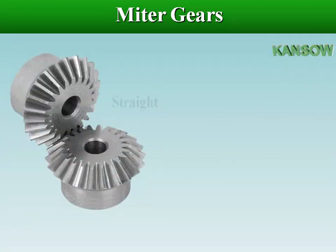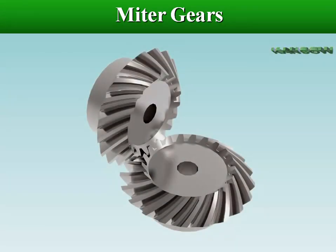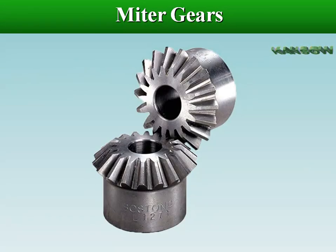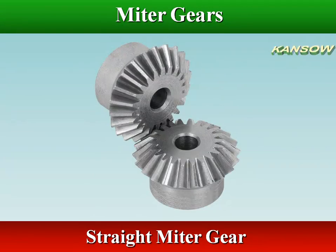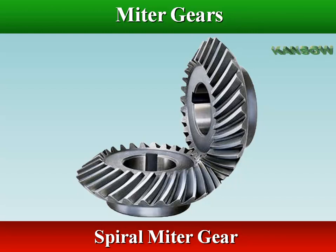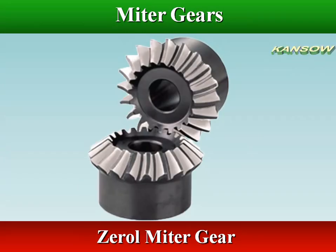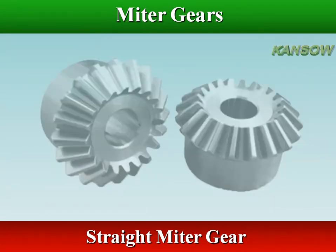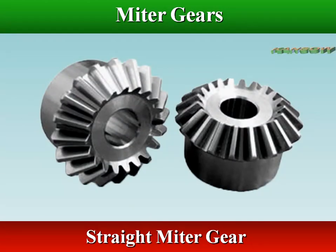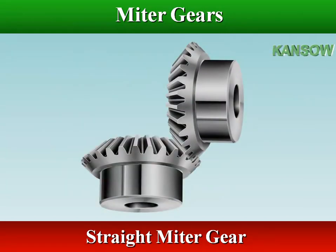Miter gears come in a straight tooth or spiral gear profile. Miter gears are used to change the direction of power transmission without changing speed. Miter gears may use the straight, spiral, or zerol bevel tooth form. Because a pair of straight tooth miter gears has the same number of teeth, with the exception of minor differences such as set screw holes and keyways, the same two gears can mate with each other.